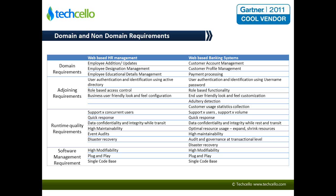For example, the employee management screen is a critical one for an HR management solution, and likewise the customer management functionality is going to be critical for a banking system. So these domain requirements are going to be the DNA of that particular product — unique across products, though in some cases they might overlap. But by and large, they are very specific to the domain as well as the product.